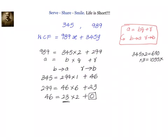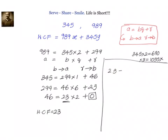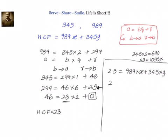The remainder just before zero is our HCF, so HCF = 23. Now let us see how to express 23 = 989·x + 345·y and find x and y. To do that, start from the row where 23 appears as the remainder. From step 299 = 46 × 6 + 23, we write: 23 = 299 − 46 × 6.